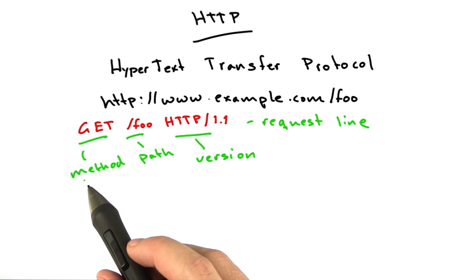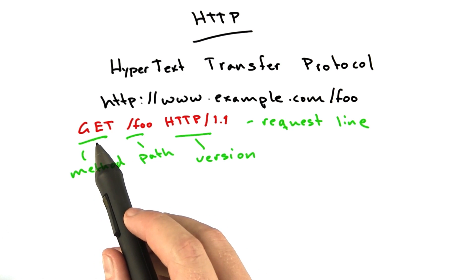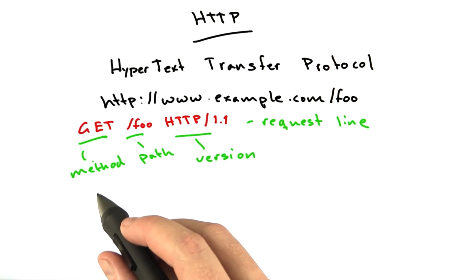The method is what type of request you're making to the server. The most common method by far is GET, and this is how you get a document from the server. Other popular methods are POST. There are other ones, but these are the ones we're going to use in the class.